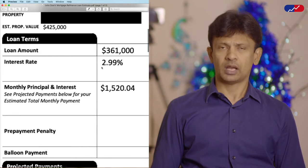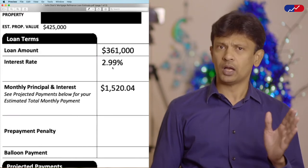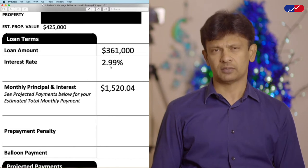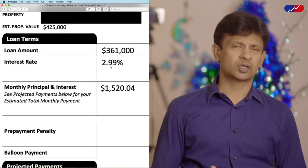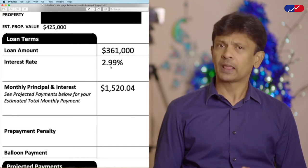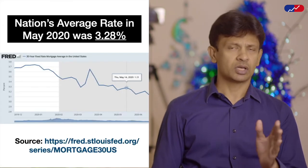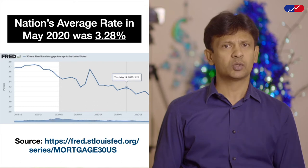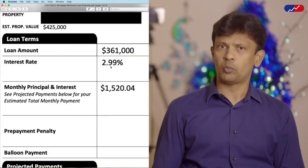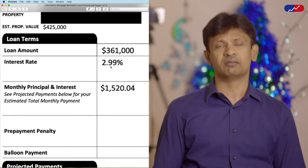Then comes the interest rate. Ideally, we want to target an interest rate that is at par or below the nation's average rate at the time of refinancing. Generally speaking, a credit score of 720 and above should give you the best rates. In this particular case, as you can see in this image, the nation's average rate was around 3.28% in mid-May, and John's got a rate of 2.99%, which means he's been offered a very competitive rate.